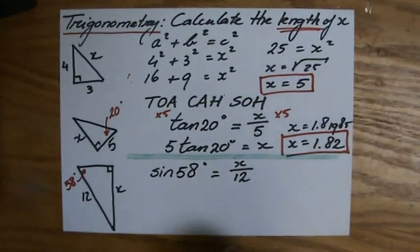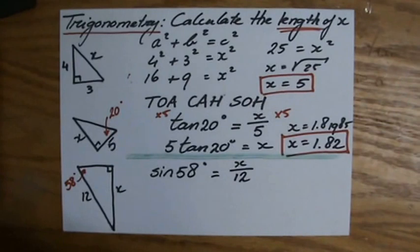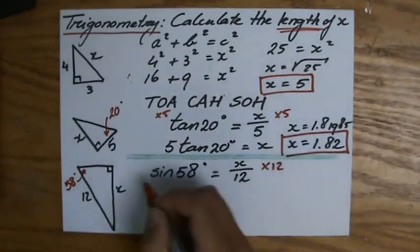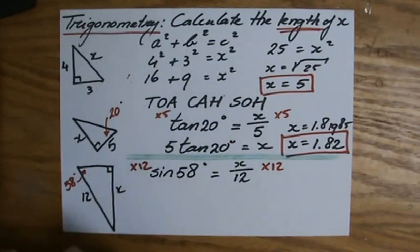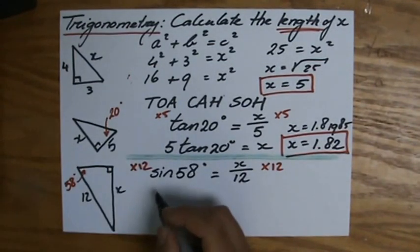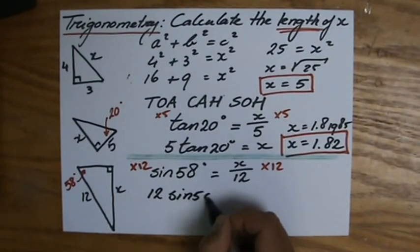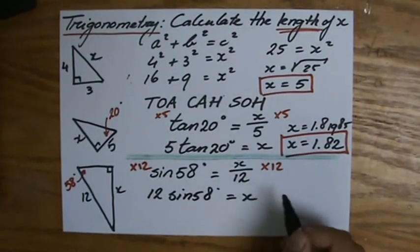Rearrange that formula. Multiply both sides by 12 to get rid of that fraction. And multiply it by the denominator, times 12, both sides. So, I'm getting 12 times the sine of 58 degrees. That will equal x.